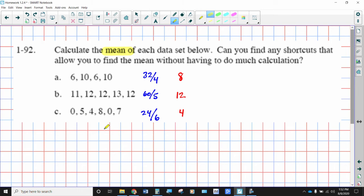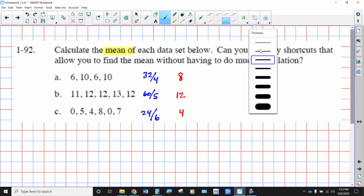Alright, calculate the mean of the data set. In order to find the mean, we're going to add all of these numbers together. They all add up to 32. There are 4 numbers, so 32 divided by 4 gives you 8. Can you find any shortcuts that would allow you to find the mean without having to do the calculation? This is kind of interesting here, how different students come up with different explanations.